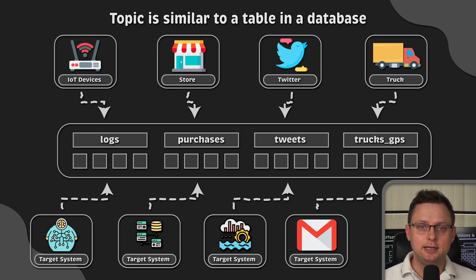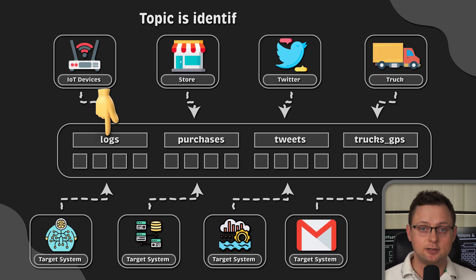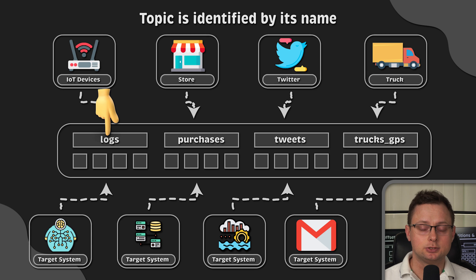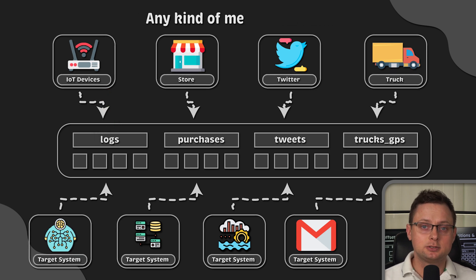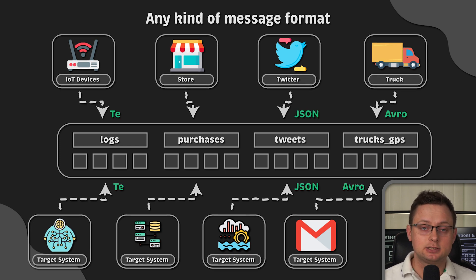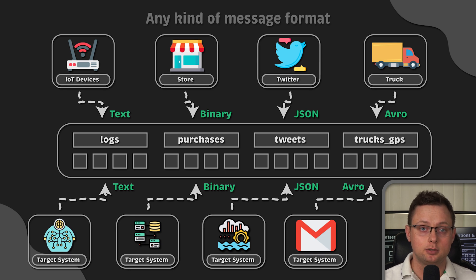There is no data verification and you can send any data you want. The way to identify a topic in a Kafka cluster is by its name — that's why we have logs, purchases, and so on. These Kafka topics support any kind of message formats. For example, you can send JSON, Avro, text, binary, or any other format you want.